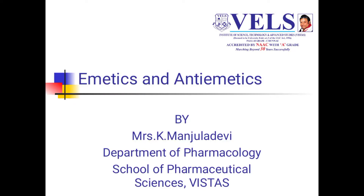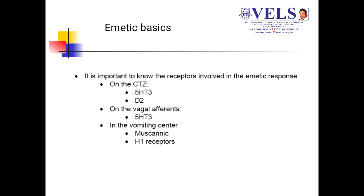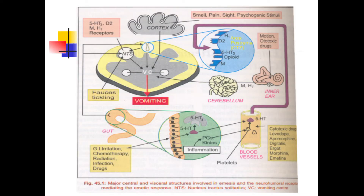Hi everyone, this is Manchula Devi, working as an assistant professor in the Department of Pharmacology, VISTAS. We are going to discuss the topic on emetics and anti-emetics. Before entering into the emetics, we have to know about the basics of the emetic response. On the vomiting center, that is the chemoreceptor trigger zone, there are receptors called 5-HT and D2. On the vagal afferents we have 5-HT, and on the vomiting center we have muscarinic and H1 receptors. These are the receptors which we have to target for treating or inducing emesis.